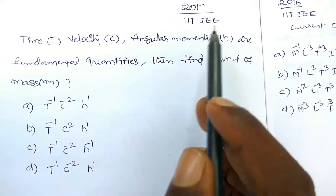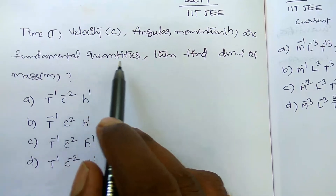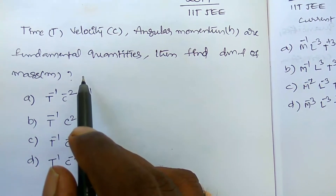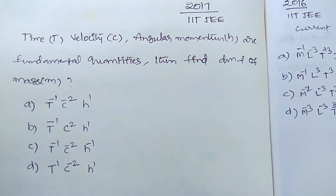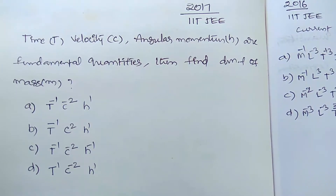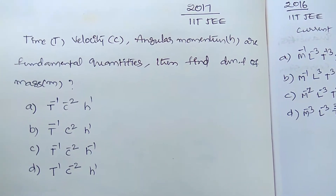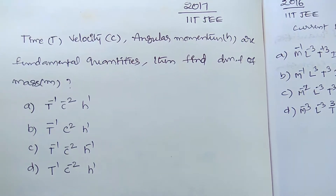Here is a question from the 2017 IIT JEE: time t, velocity c, and angular momentum h are taken as fundamental quantities. Find the dimensional formula of mass. This model is very well known to us — we have already discussed many examples. Let us start. Please pause the video and try to calculate the answer first.